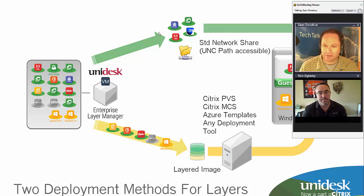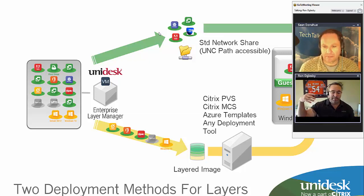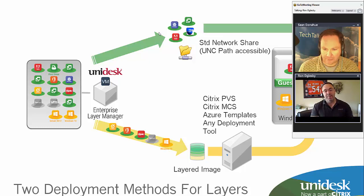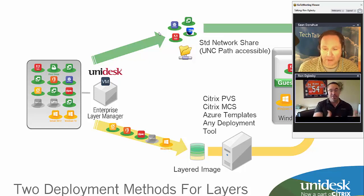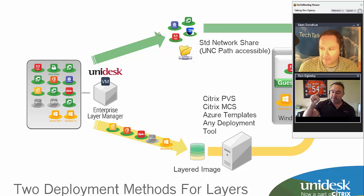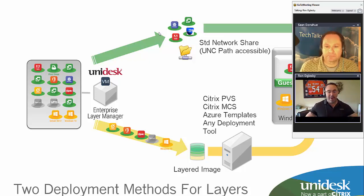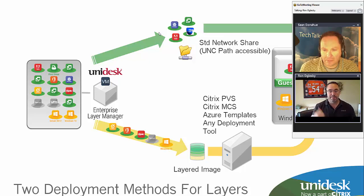Every app goes into its own layer. You can put Office, electronic health record systems, the VDA, or PVS target software into their own layers. Based on what that app does, you as the IT admin pick how it's delivered. For example, single sign-on tools and the VDA need to be there when the machine boots — those you push out into your image. But then you have all these tertiary apps, the ones used by only 50 or 100 people. Those you deliver real-time. As the user logs in, the VHD is mounted, delivered into their desktop, and it's still centralized and can still be updated.